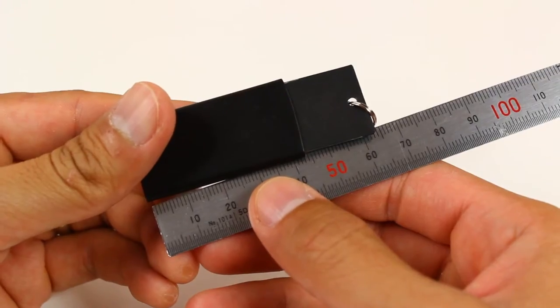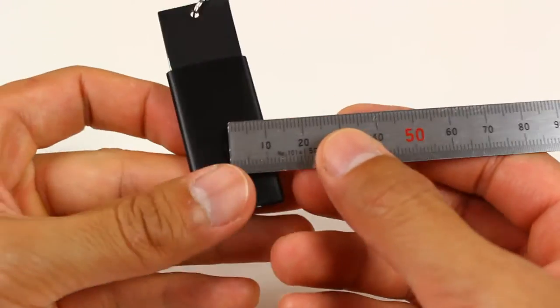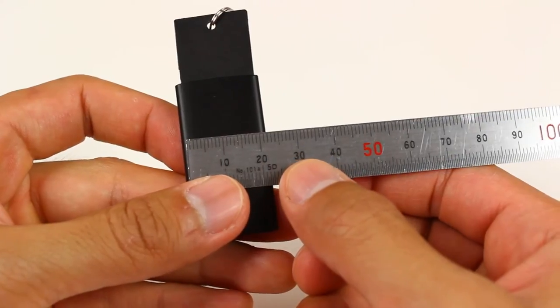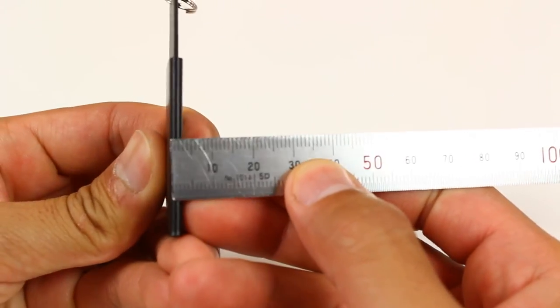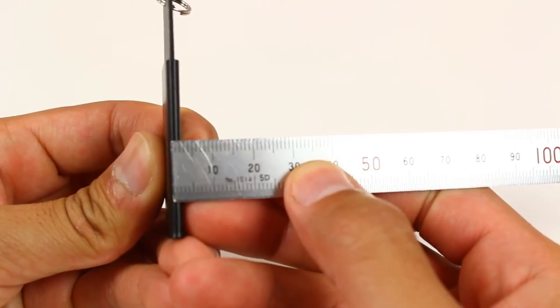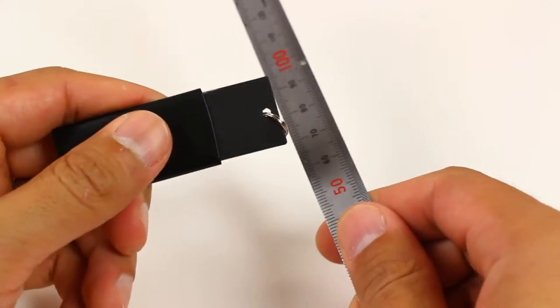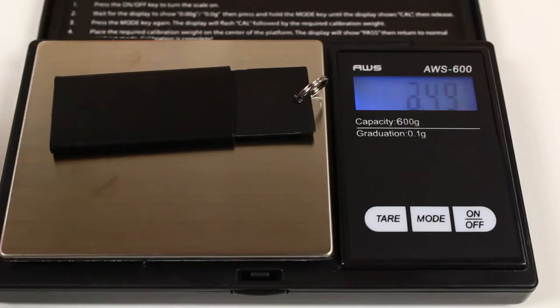The razor blade measures just 6.5 centimeters in length, 2.4 centimeters in width and 3 millimeters in thickness. It weighs in at just under half an ounce.